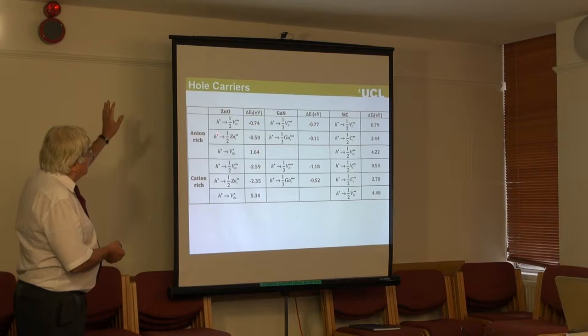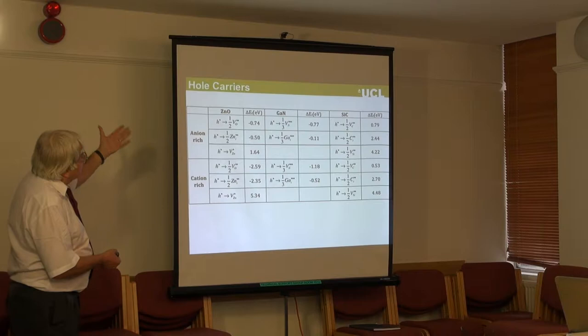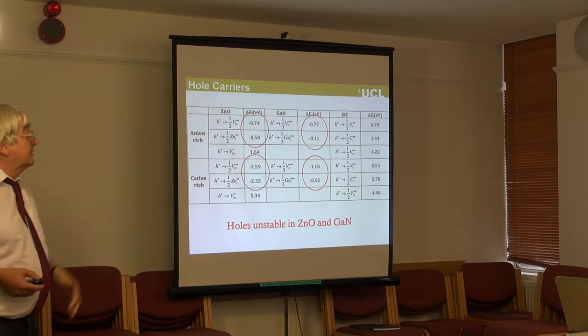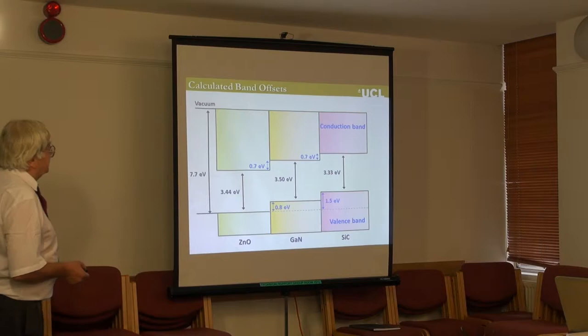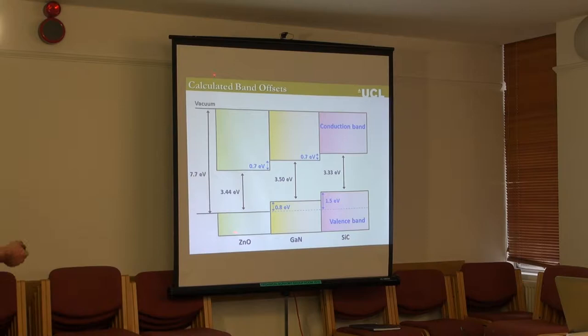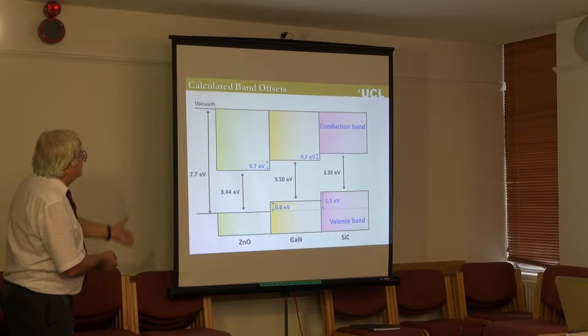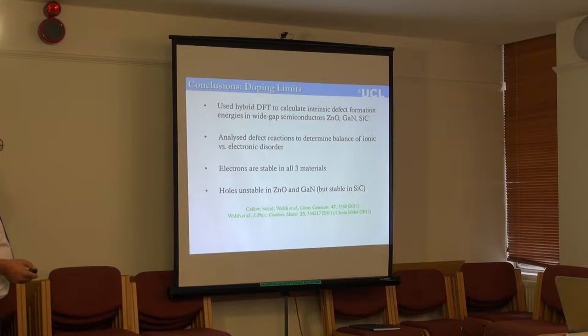This helps us understand a long-standing experimental issue. There's a huge literature on attempts to p-type dope zinc oxide, and it doesn't work — because of this intrinsic thermodynamic aspect of the material; you're just fighting against thermodynamics. The same is true for gallium nitride. The electronic structure shows that in zinc oxide, the valence band is just too deep — it costs too much energy to create holes, so the system makes vacancies instead.